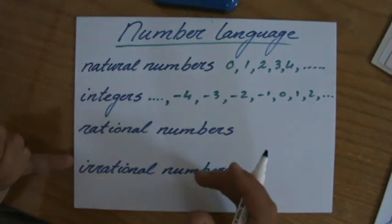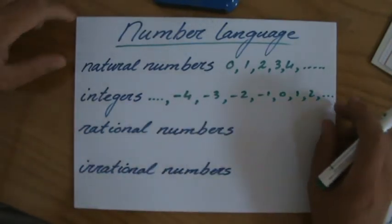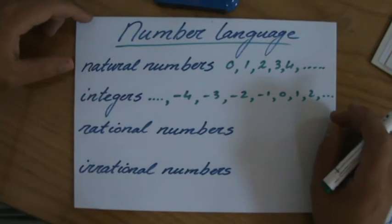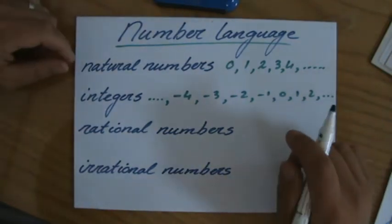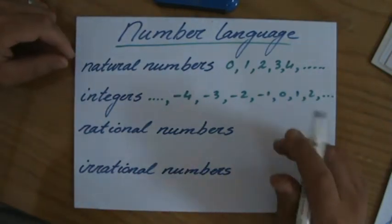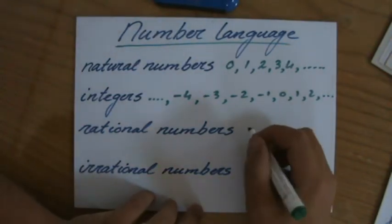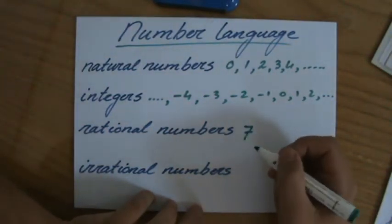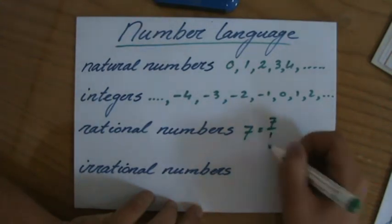Now we have rational and irrational numbers. Rational numbers are those numbers which you can write as a fraction. For instance, the number seven is a rational number because I could write that as a fraction: seven over one.